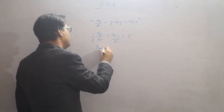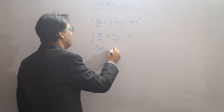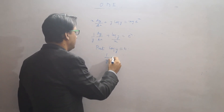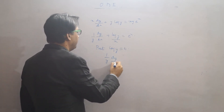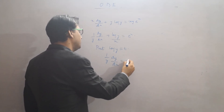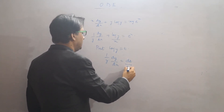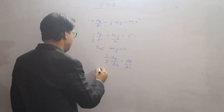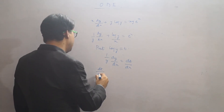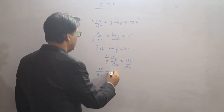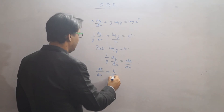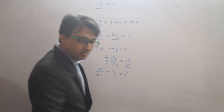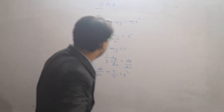Now, I put the substitution log y equals t. So (1/y) dy/dx equals dt/dx. This gives me dt/dx plus t/x equals e^x. So this has made it a linear differential equation.